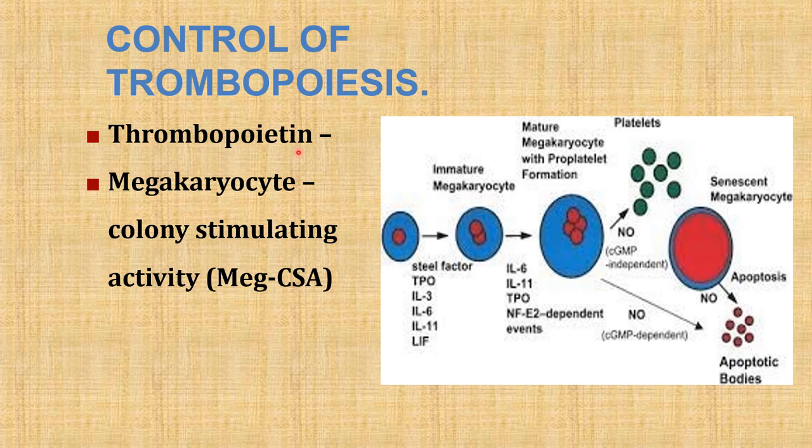Colony-stimulating activity, produced by monocytes, T lymphocytes, fibroblasts, and endothelial cells, stimulates erythropoiesis and granulopoiesis along with thrombopoiesis. There is a natural feedback regulatory mechanism by increased platelet production when removal of platelets occurs, and decreased production by transfusion — apart from thrombopoietin and colony-stimulating activity.